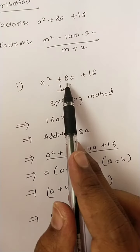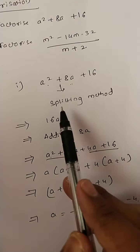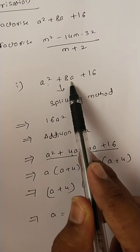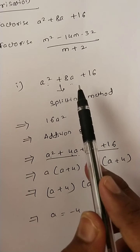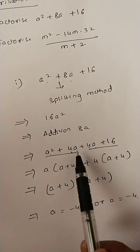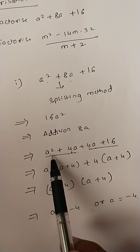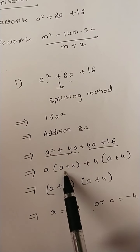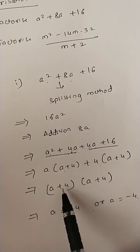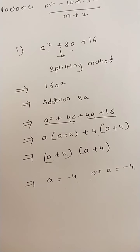Once again, in the splitting method for a square plus 8a plus 16: I split 8a into 4a plus 4a because 4a plus 4a gives 8a and 4a into 4a gives 16a square. Then a square plus 4a gives a(a+4), and 4a plus 16 gives 4(a+4). So the factors are (a+4)(a+4), and a equals minus 4. I hope you understood this splitting method.